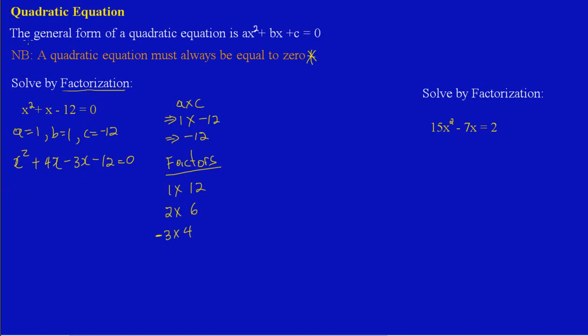So I have, I'm going to take out what is common. So I have an x that is common. Open bracket, x into x squared will leave me with x. And x into 4x, I will have a positive 4. Close my bracket, bring down that sign. And I'm asking myself what is common to 3x and 12. I know, I see that I have a 3 here. So I'm saying 3 is common. So 3 into negative 3x will leave me with a positive x. And a negative 3 into a negative 12 will leave me with a positive 4. And this is all equal to 0.